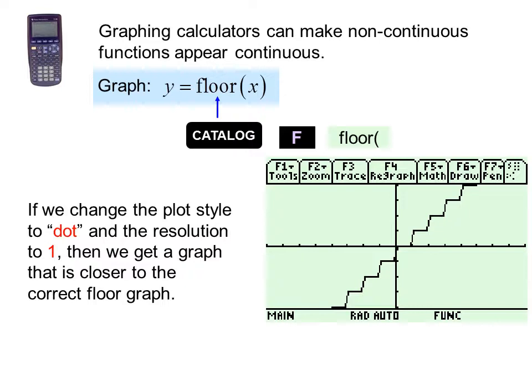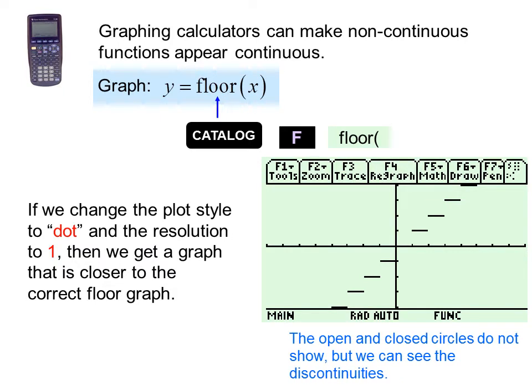If we change the plot style to dot and the resolution to 1, then we get a graph that is closer to the correct floor graph. Of course, the titanium edition already knew this and left the gaps. Once again, the open and closed circles do not show, but we can see the discontinuities.